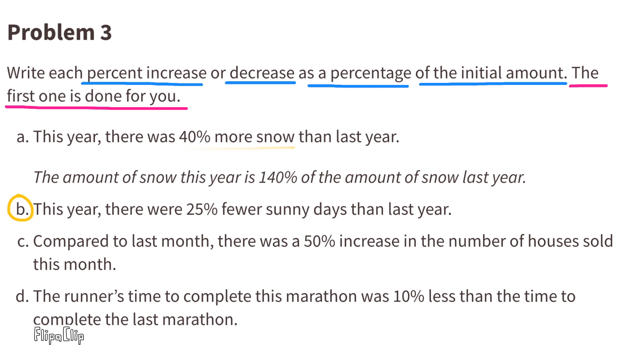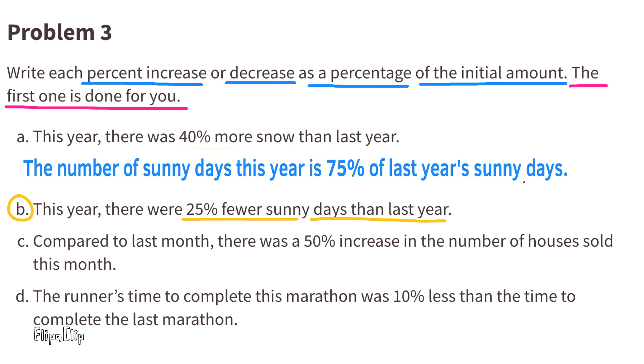B. This year, there were 25% fewer sunny days than last year. The number of sunny days this year is 75% of last year's sunny days.